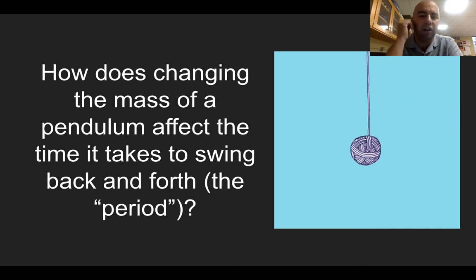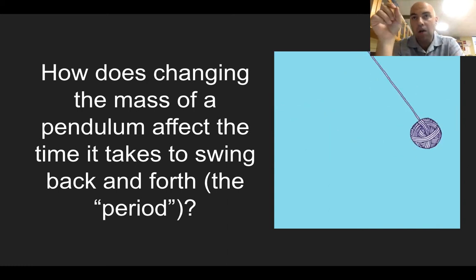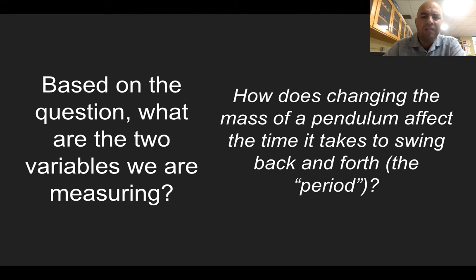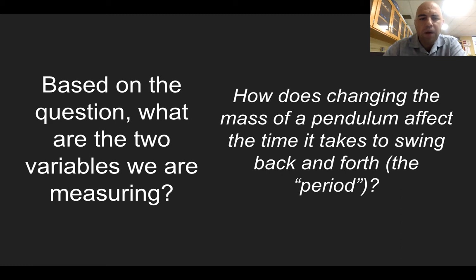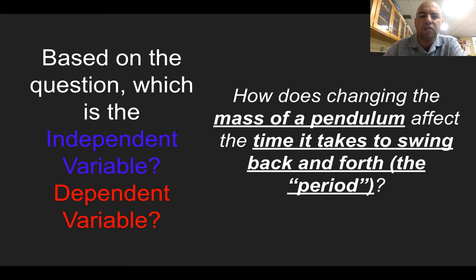Let's use the example of a pendulum. The question is: how does changing the mass of a pendulum affect the time it takes to swing back and forth? The name for the time it takes to swing back and forth is called the period. Based on this question, what are the two variables we're measuring — mass of the pendulum, and the time it takes to swing back and forth?